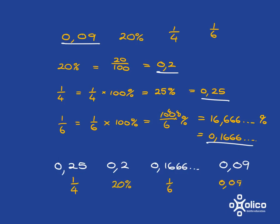And writing them back in the form we originally were given. Biggest is a quarter, then 20%, then a sixth, and then 0.09.